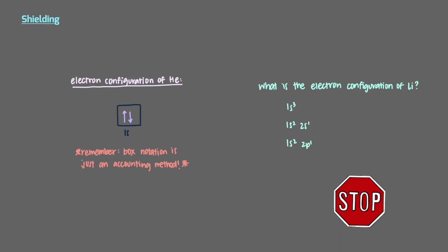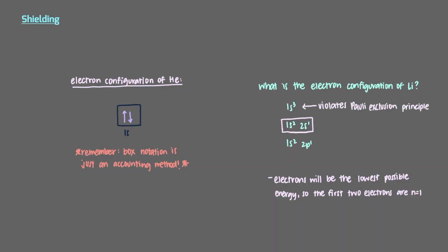What's the electron configuration of lithium? We know that electrons will be the lowest possible energy, so that's why the first two are n equals 1 electrons. But what about the third? It can't be a 1s electron since that would violate the Pauli exclusion principle. We can't have two electrons with the same four quantum numbers.